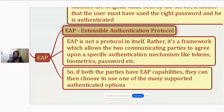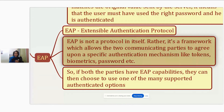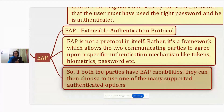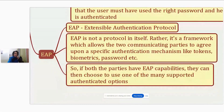If both parties are configured to use EAP, they agree to use it and then negotiate the actual authentication parameters - what exactly to use to authenticate. Should they use a password, a digital certificate, a one-time password (OTP), a token, or a biometric mechanism? Once they have agreed upon the exact mechanism, the authentication happens. That is why EAP is not exactly a protocol in itself but a framework which allows the two communicating parties to agree upon a specific authentication mechanism like tokens, biometrics, passwords, or digital certificates.